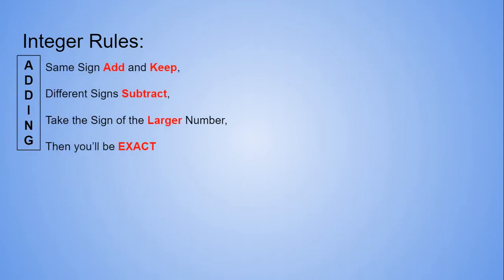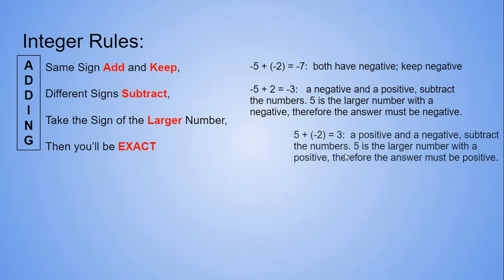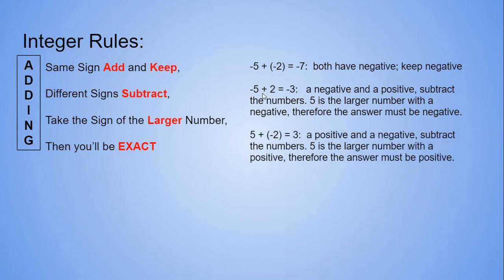We have adding. Same sign, add and keep. Different signs, subtract, and then take the sign of the larger number—you'll be exact. We have two examples over here with different signs, keeping the sign of the larger number for our answer. Same sign here, keeping the sign. That is for adding.